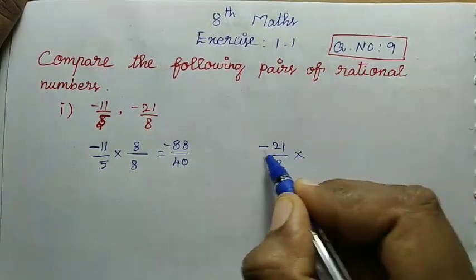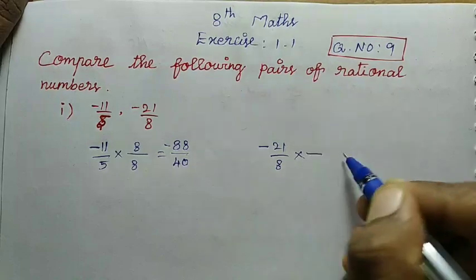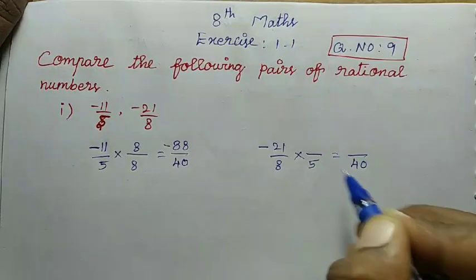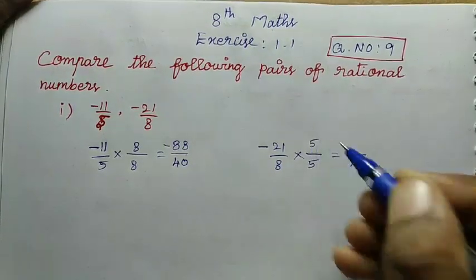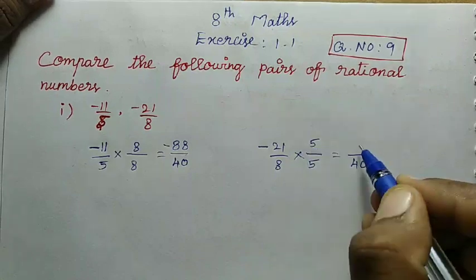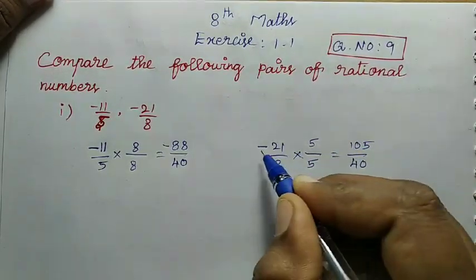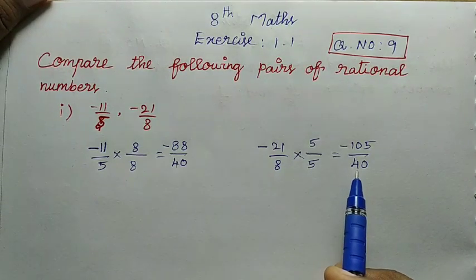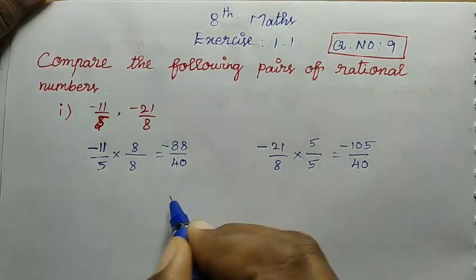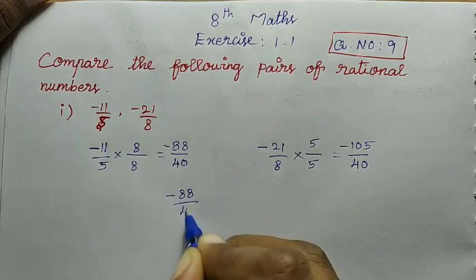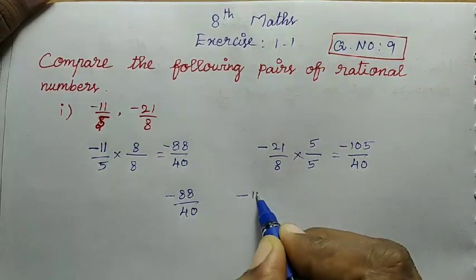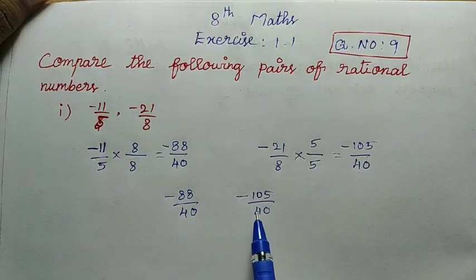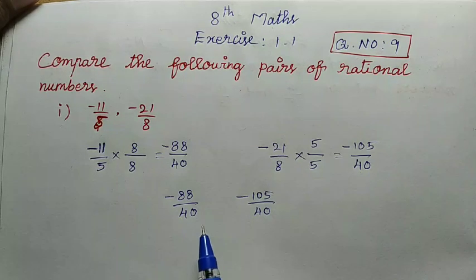For minus 21 divided by 8, the denominator value becomes 40. We multiply by 5: the numerator 21 multiplied by 5 is 105, giving minus 105 divided by 40. Now the two values have the same denominator: minus 88 divided by 40, then minus 105 divided by 40. We compare to find which is greater and which is smaller.